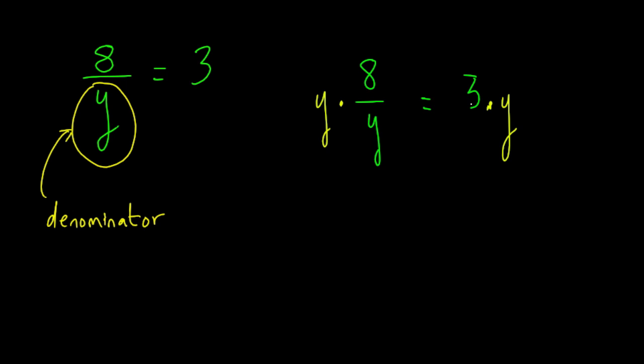So on the right side over here, 3 times y gives us 3y. But on the left side, this is going to be very helpful because we have y times 8 divided by y. And what's y times 8 divided by y? Well, these y's are going to cancel out, and we're only going to be left with 8.